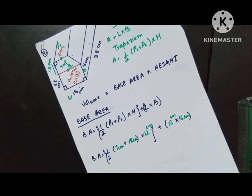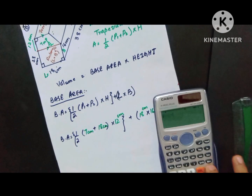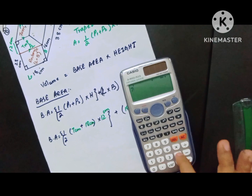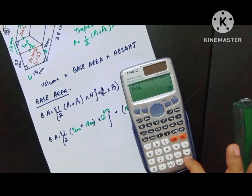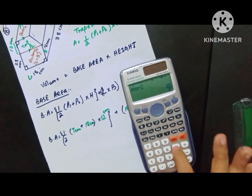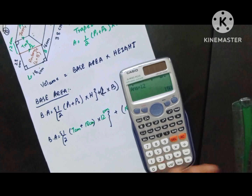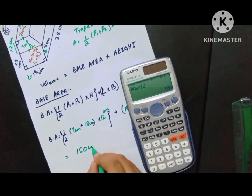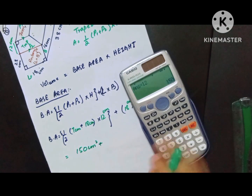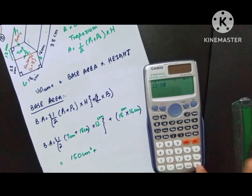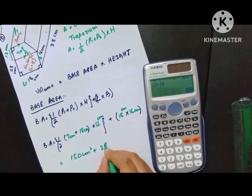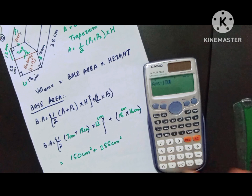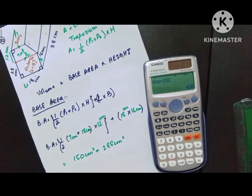Quickly do the calculation: (7 + 18) ÷ 2 × 12 = 150 cm². Then for the rectangle: 18 × 16 = 288 cm². Add both together and you get the total base area — 150 + 288 = 438 cm². This is only the base area.